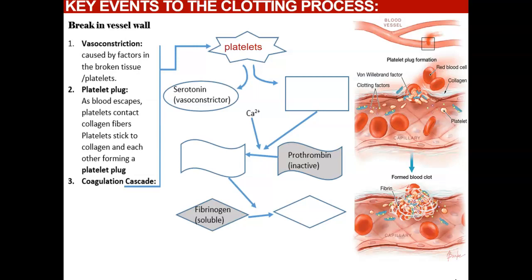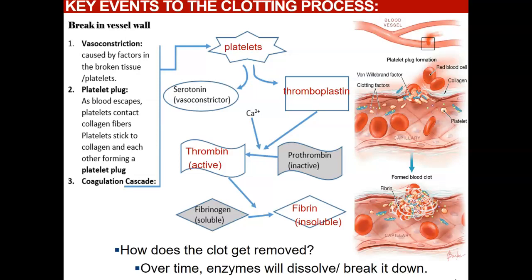Each step in this cascade relies on the one before it to happen. The bottom line: you get fibrin, you get red blood cells and platelets, and you'll have a blood clot forming, which allows the blood vessel to heal. Over time, enzymes will dissolve and break down the fibrin, and then the clot will start to dissolve.